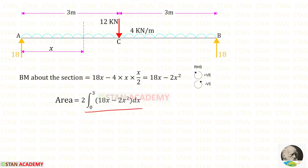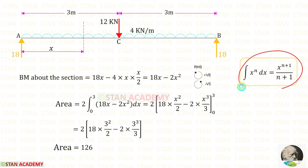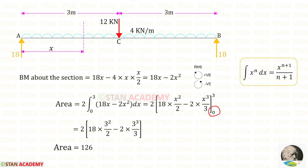Now let us perform the integration with limits 0 to 3. You can use a calculator; there is a link in the description if needed, or do it manually using the formula. Integrating: ∫(18x − 2x²)dx = 18·(x²/2) − 2·(x³/3). Applying the upper limit 3 (the lower limit gives 0): 18·(9/2) − 2·(27/3) = 81 − 18 = 63. Multiplying by 2 gives the total area = 126.